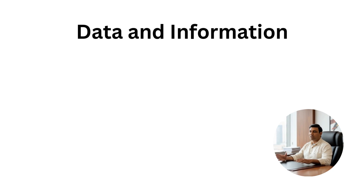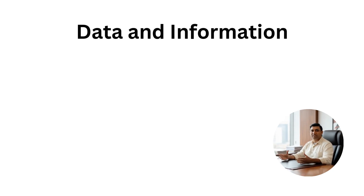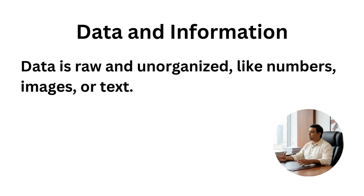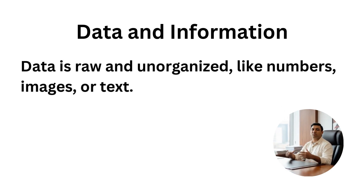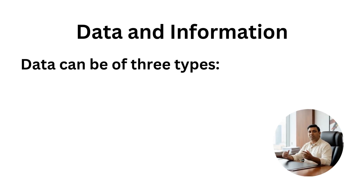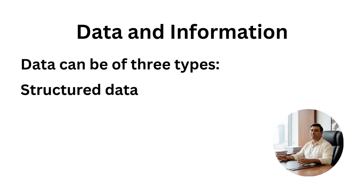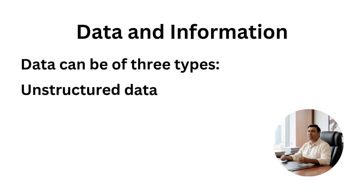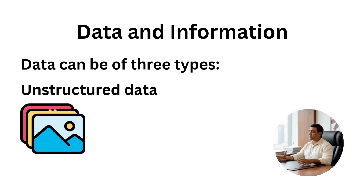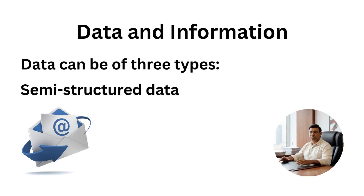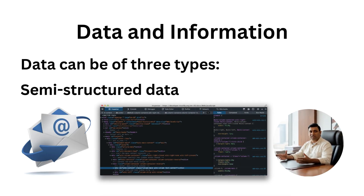Data and information. Computers deal with data, but what's the difference between data and information? Data is raw and unorganized, like numbers, images, or text. Information is processed data that makes sense. Data can be of three types: structured data, neatly arranged like attendance records in a table; unstructured data, like images, videos, and social media posts; and semi-structured data, like emails or HTML files, where tags help identify data.